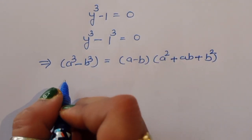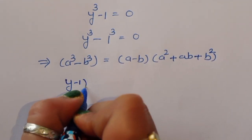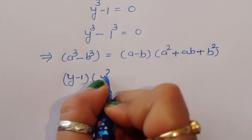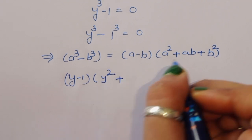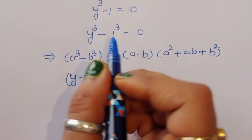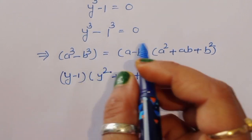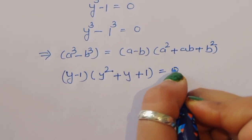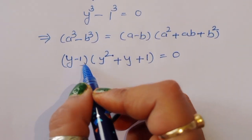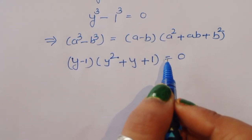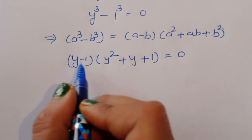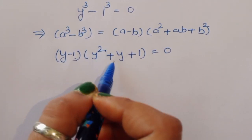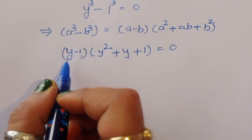Using this formula on y³ - 1³, we can write it as (y - 1)(y² + y·1 + 1²) = 0, which gives us (y - 1)(y² + y + 1) = 0.